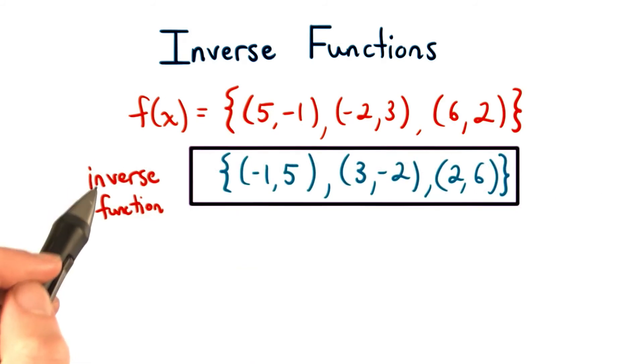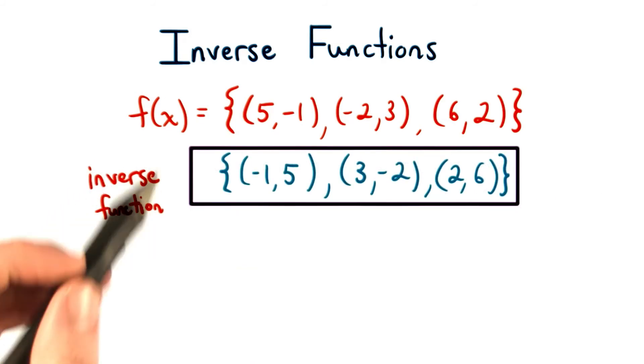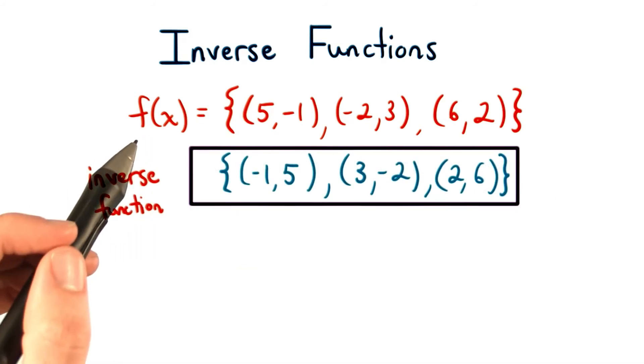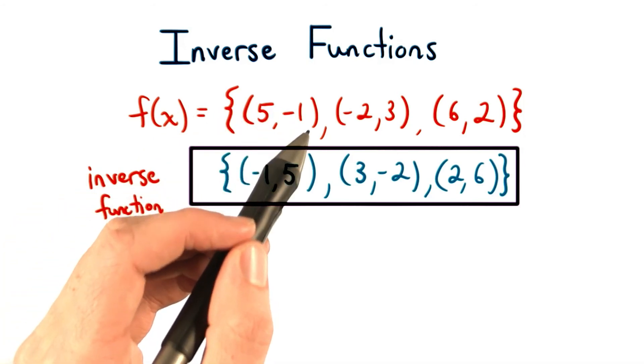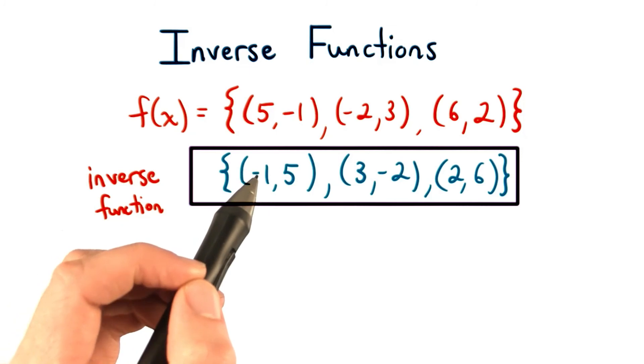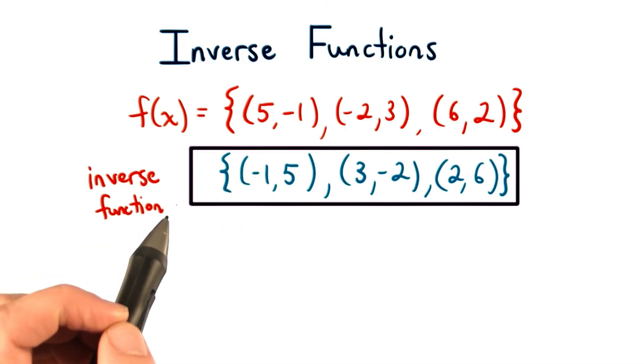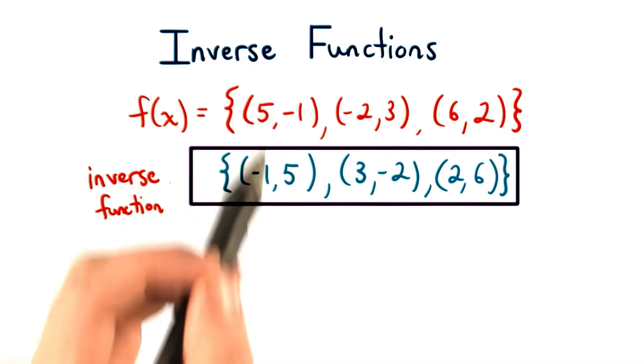Keep in mind that inverse functions undo the original function. So, if I put in 5, I get an output of negative 1. So, to undo that, when I put in negative 1 to my inverse, I want to get out the output of 5, the original input.